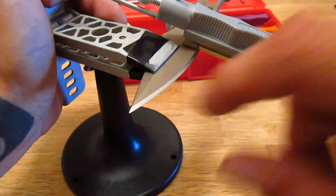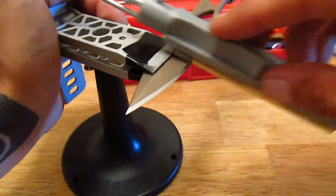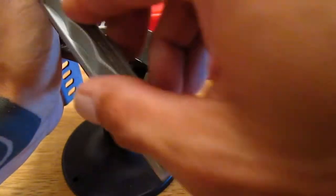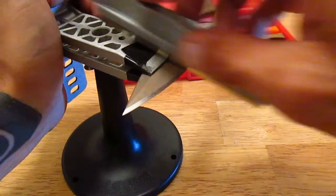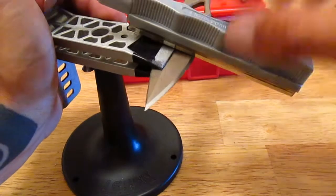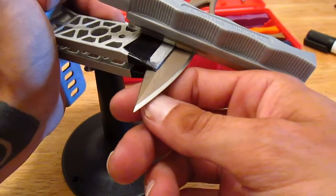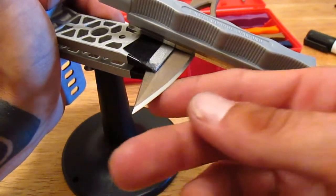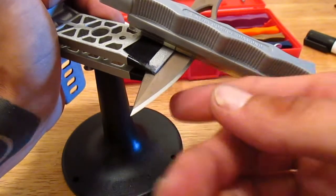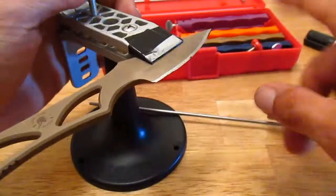You'll do lighter strokes back and forth and then you'll want to count actually how many times you go a full pass. Another way is you could take your fingernail and there'll be a burr on the underside that you're not sharpening. Once that burr is along the total length of the edge, you could flip your knife over and begin on that side.